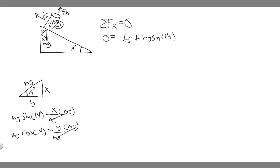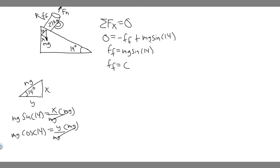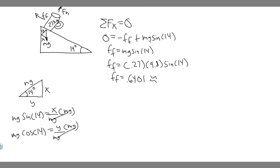So we have all forces in the x direction summed up. The normal force and the y component of weight are both in the y direction, not x. Solving for the force of friction: F_friction = mg·sin(14) = 0.27 × 9.8 × sin(14°) ≈ 0.64 newtons. That's the magnitude of the frictional force — your answer to part A.